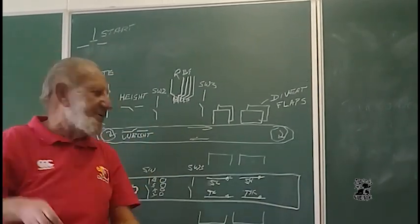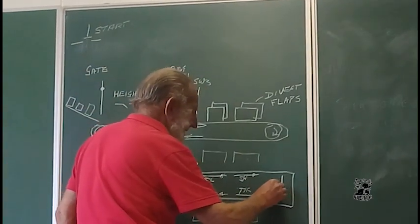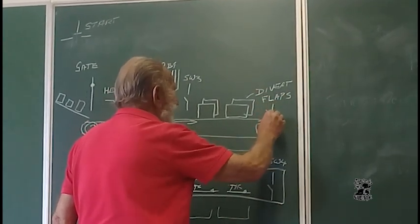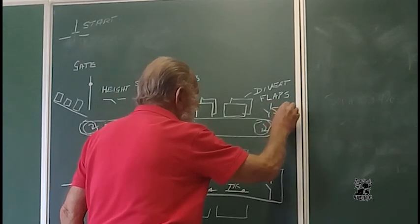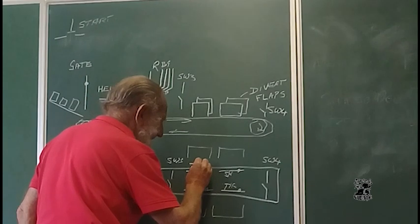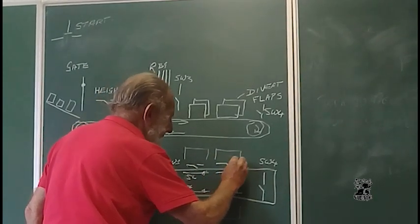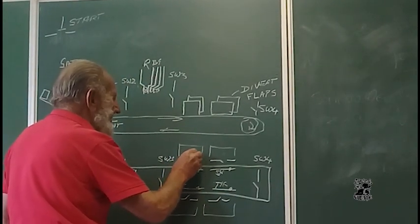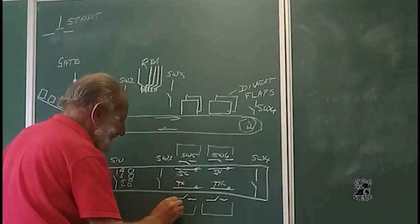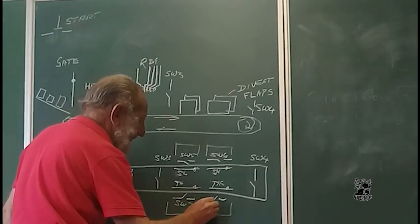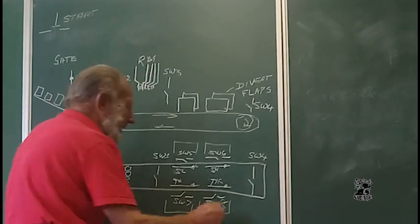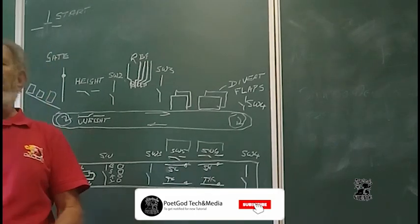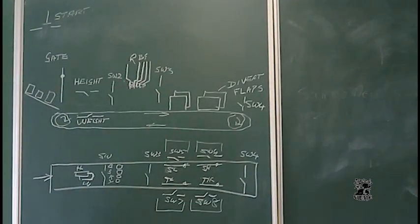Now, as it falls into the boxes, okay, first of all, there is a switch four here at the end, which I will talk about just now, switch four. But as it falls into the box, there are four switches here. One, two, three, four. Switch five, switch six, switch seven, and switch eight. Can you see that it will close one of those four? Because it's going to fall off.